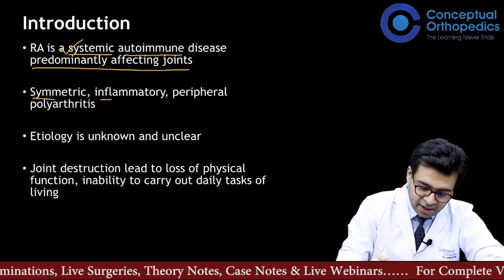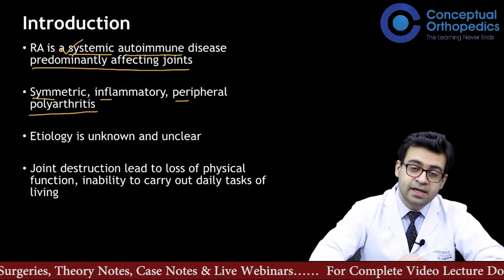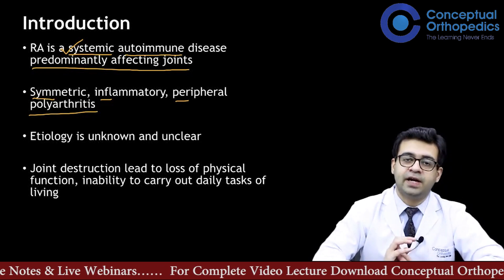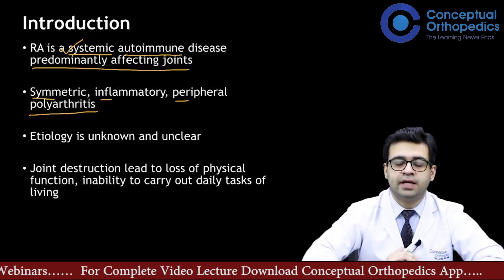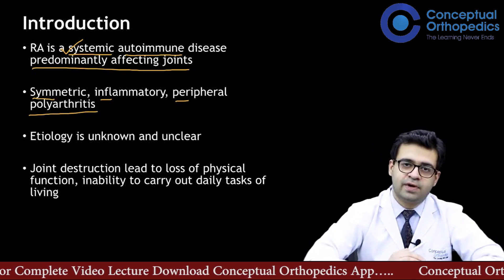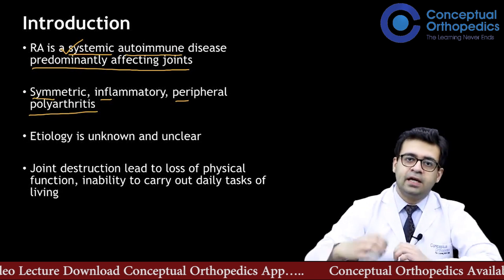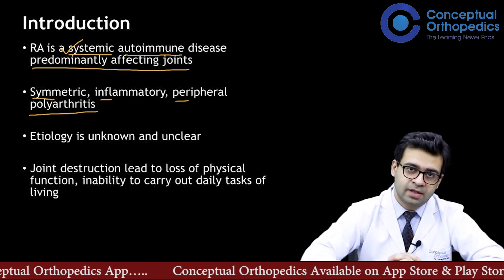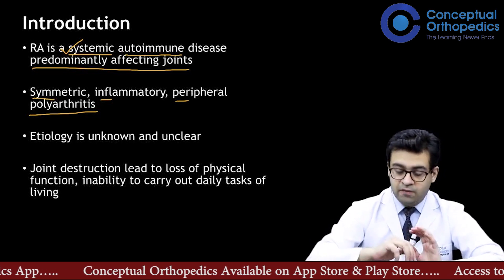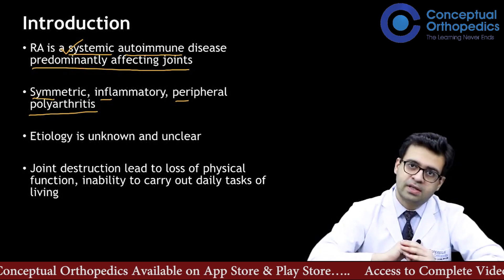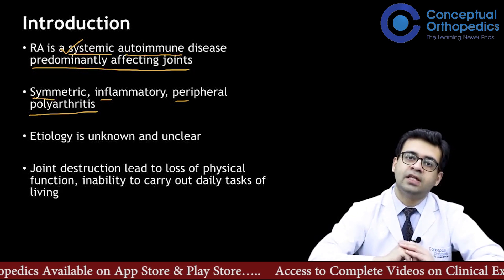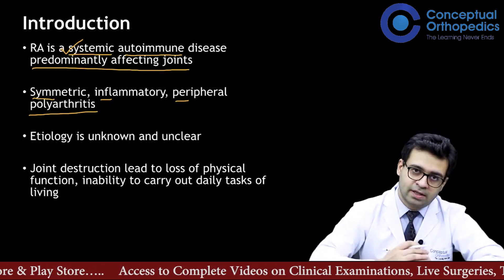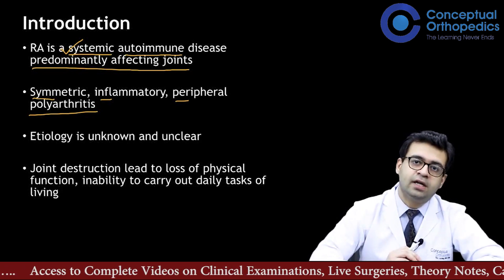Rheumatoid arthritis is a symmetric inflammatory peripheral polyarthritis. Symmetric means symmetry of joints affected on both sides of the body — left and right. If right elbow is affected and left elbow is affected, that is symmetric. Even if the fifth metacarpophalangeal joint on one side and the third on the other are affected, it is still called symmetric, because for small joints of hands and feet, the region of the joint matters and not the exact matching of the joint.